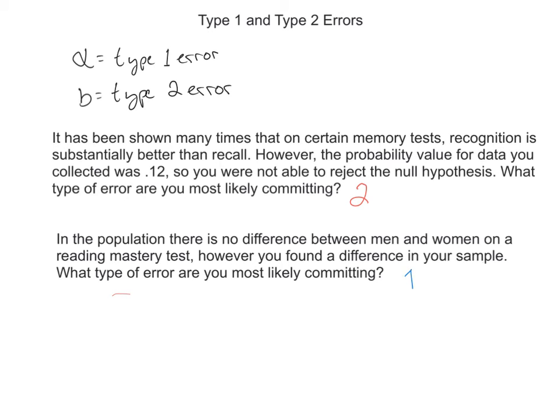You're probably committing a type 1 error. Because what you're doing is you're saying there's totally a difference between a man and a woman on this reading mastery test, and there's really not. So you're claiming that your medicine works, it cures people, but it doesn't.